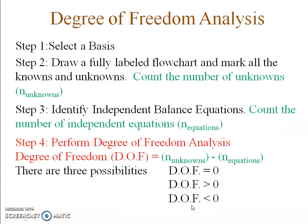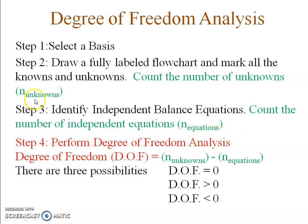By now you must have an idea of why I'm counting the number of unknowns and equations. To recap, in order to solve any problem: first select a basis, then draw a fully labeled flowchart and mark all known and unknown variables. Next, count the number of unknown variables, then write down all the independent equations and count them — call that N_equations. The number of unknowns we call N_unknowns. Then perform degree of freedom analysis: degree of freedom equals number of unknowns minus number of equations.